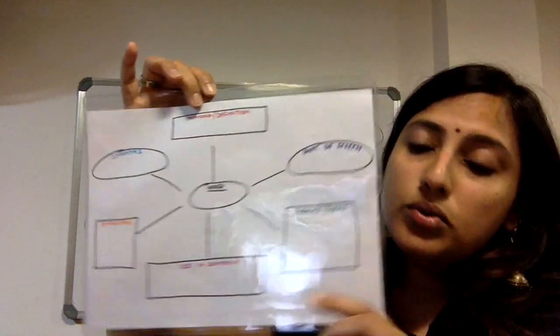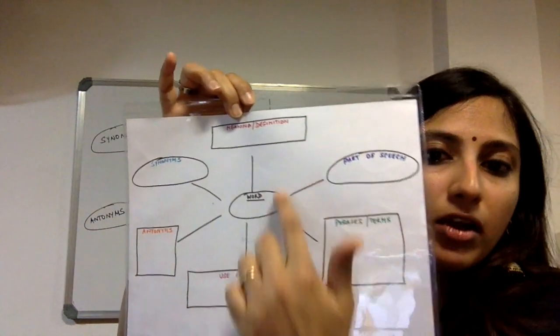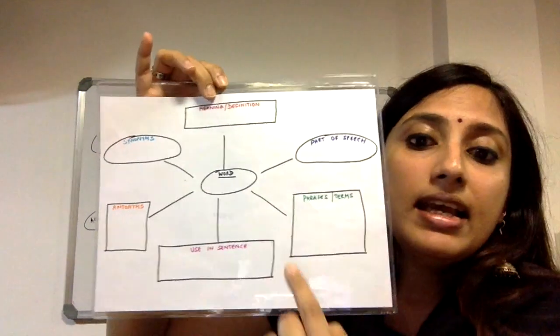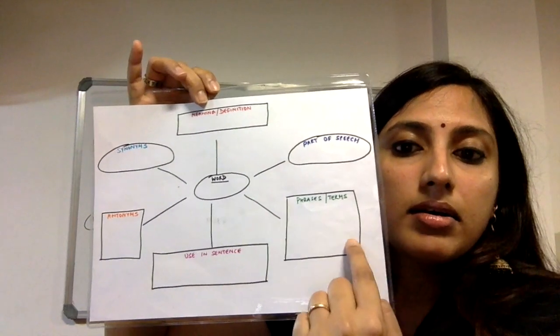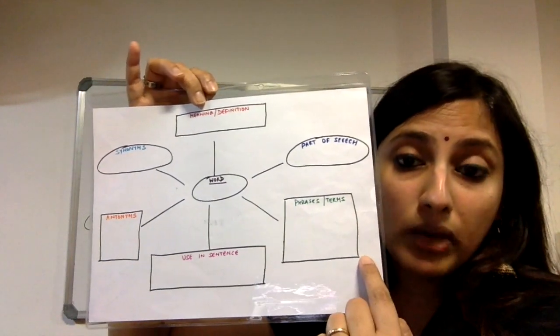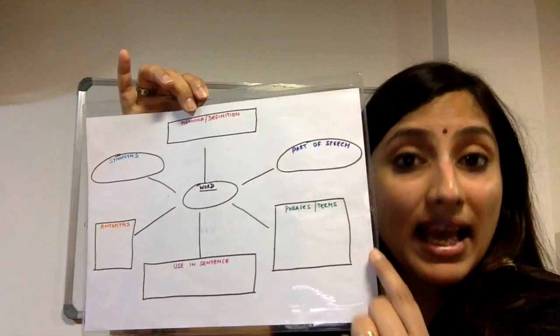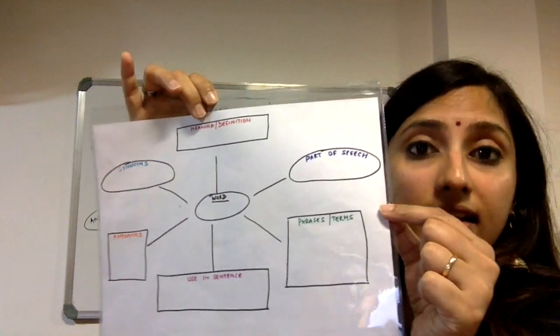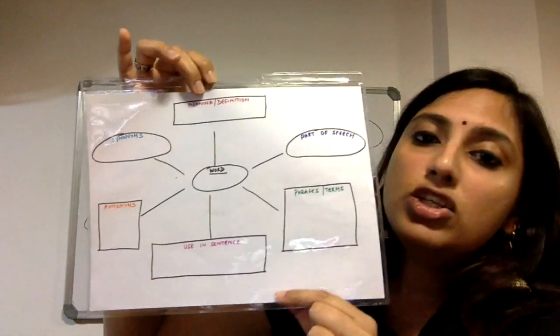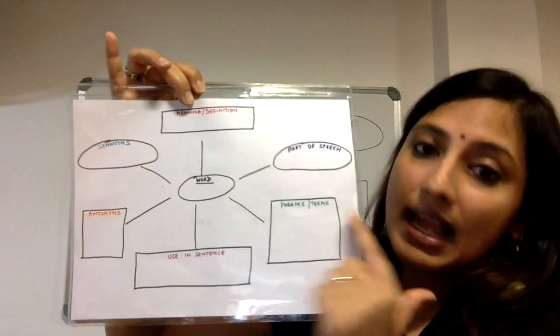One idea that you can use is to put a blank word web like the one I've created. As you can see it has the same circles that were created on the whiteboard except that I've left some blank space and then I've inserted this word web template into a page protector like this.